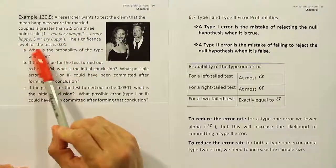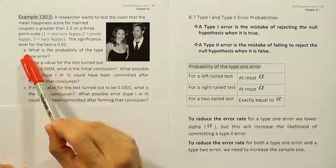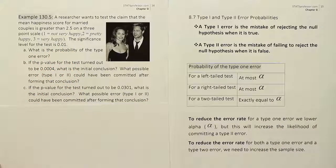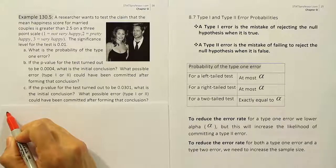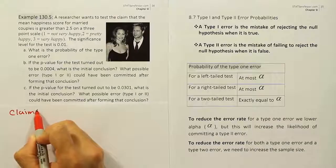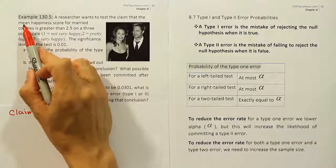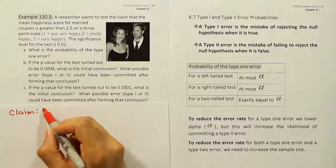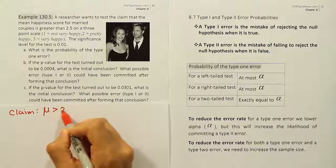The significance level for the test is 0.01. So part A says, what is the probability of the type 1 error? Well, if you look at the claim here for the problem, so let's write that down first. If you look at the claim here, it says that the claim is that the mean is greater than 2.5.